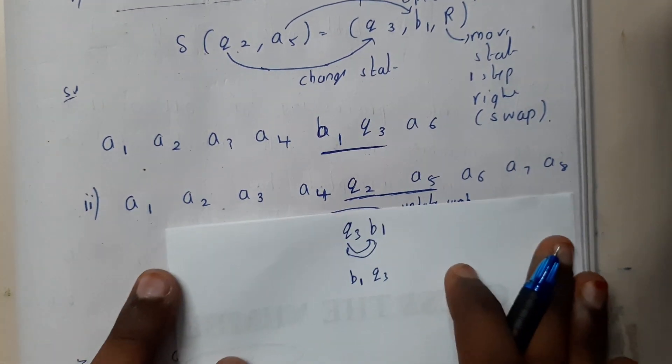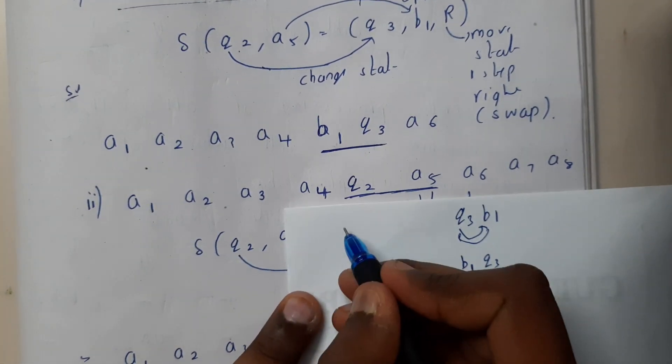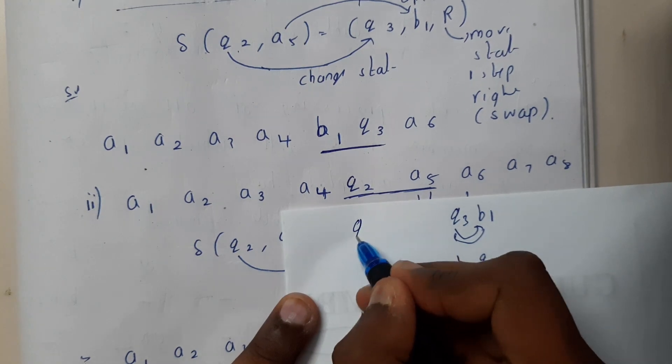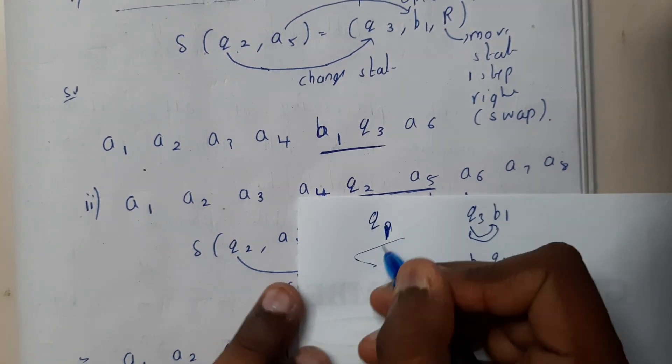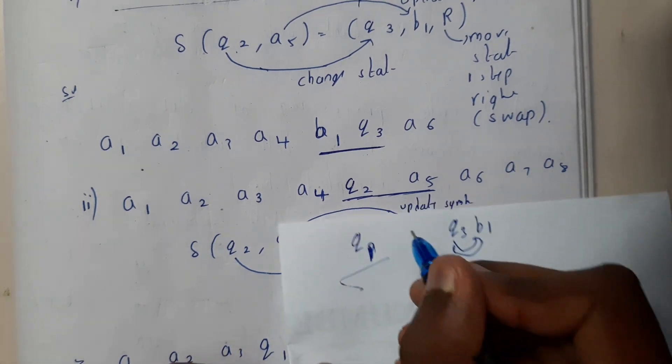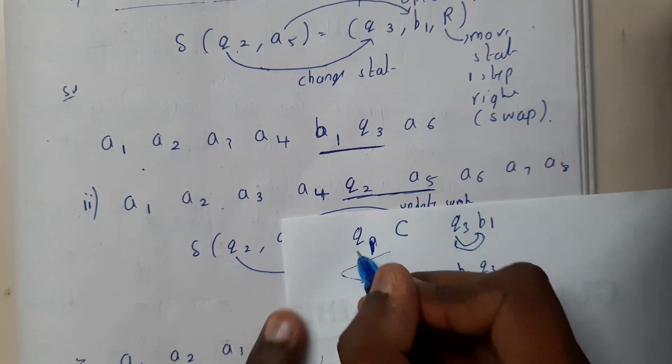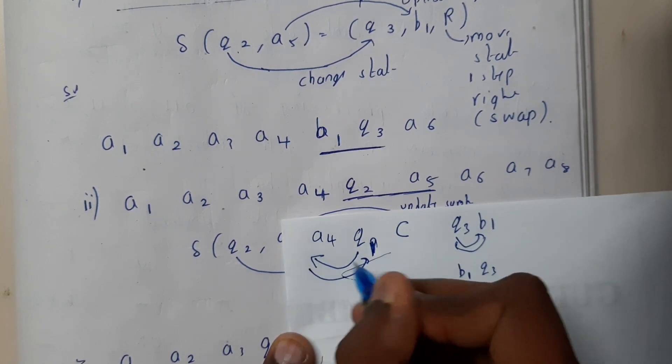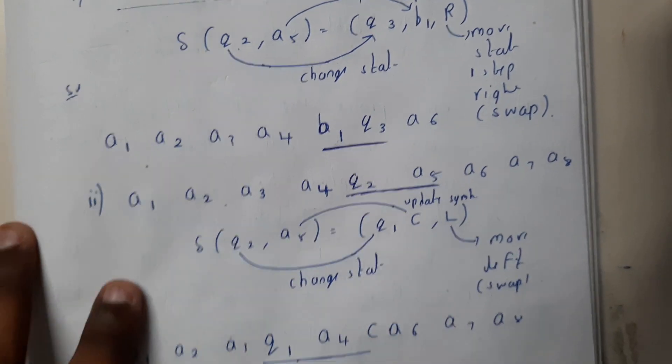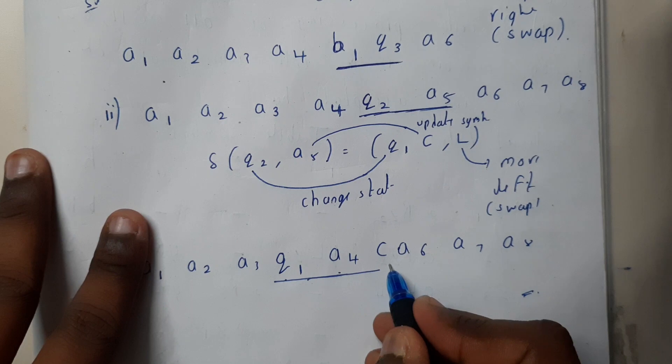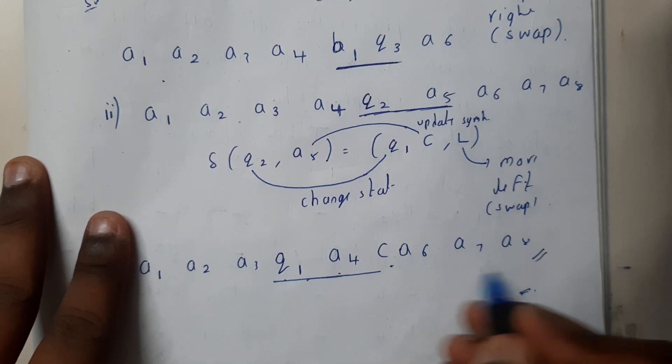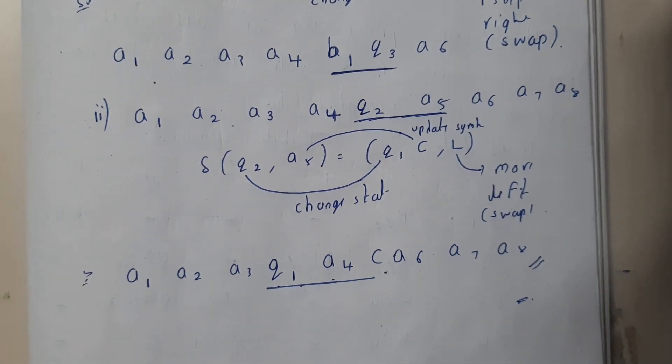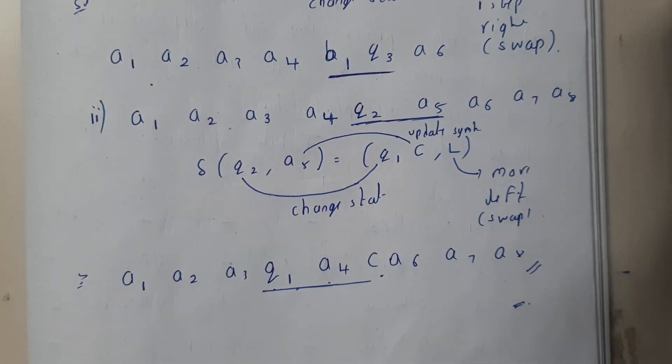Now the operation will be done on three things. q2 will be updated to q3, sorry q1, and a5 is updated to c. Now it should move left, so the swapping is done between the a4 and q1. The output will be q1, a4, c. I hope everyone got a small idea, at least the basic idea of how left and right work. Once we are going through examples you'll have a clear idea.